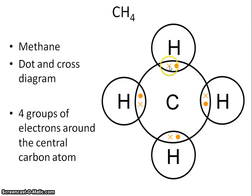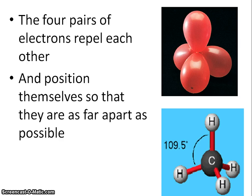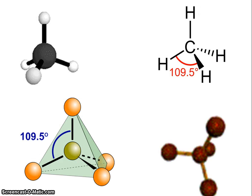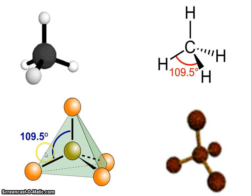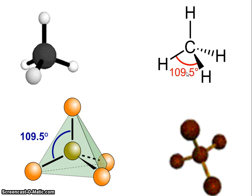Here we have methane, CH4. From the dot-cross diagram, there are four groups of electrons around the central carbon atom. Those four pairs of electrons repel each other and move as far away from each other as possible, giving us a tetrahedral shape. Joining the points of the molecule gives a four-sided figure — hence the name tetrahedral — and the bond angle is 109.5 degrees.